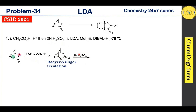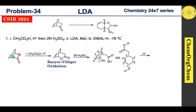Under acid conditions, the lactone quickly undergoes acid hydrolysis or ester hydrolysis, which produces the corresponding hydroxy carboxylic acid. This hydroxy carboxylic acid is still present in the acidic medium. For convenience, we can redraw the structure: numbering starts at position one, ending at position six — the first position holds the hydroxy group and the fourth position holds the carboxylic acid unit.